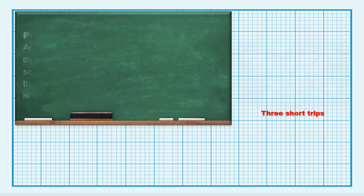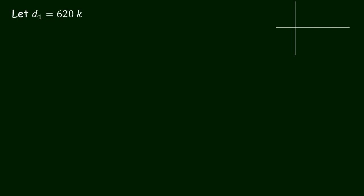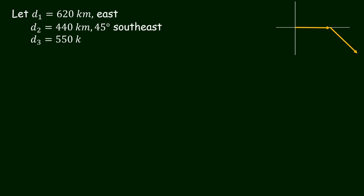Second problem: an airplane trip involves three legs with two stopovers. The first leg is due east for 620 kilometers. The second leg is at 45 degrees southeast for 440 kilometers. And the third leg is at 50 degrees southwest for 550 kilometers. What is the plane's total displacement? We let T sub 1 equals 620 kilometers east, T sub 2 equals 440 kilometers 45 degrees southeast, and T sub 3 equals 550 kilometers 50 degrees southwest.